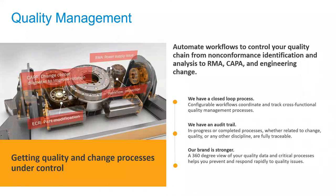Quality management is the final pillar, directly coupled to change management. It encompasses systems like RMA — returned merchandise authorization — CAPA — corrective and preventative action — and NCRs — non-conformance reports. It puts a process in place for regular checks and balances on your design. Quality issues can lead all the way back to engineering through the change management paradigm — what's called closed loop design. This means an audit trail, a stronger brand through identifying and resolving issues, and improving processes over time.